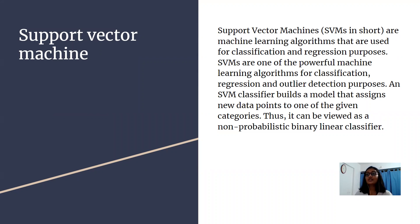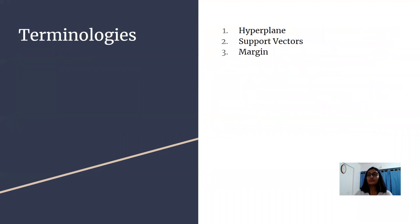Now we should be familiar with some SVM terminologies. First one being hyperplane. A hyperplane is a decision boundary which separates between given set of data points having different class labels.